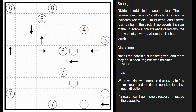Hey puzzlers, this is Steve here with another video on how to solve logic puzzles. This one's called the Sashigani. How it works is you're going to divide the grid into L-shaped regions. The regions must be only one cell wide. The circle indicates where the L must bend — the elbow — and if there's a number in that circle it represents the size of the L. Arrows indicate the ends of the region and point towards where the L is going to bend. Not all possible clues are given and there may be some hidden regions with no clues provided.